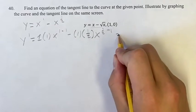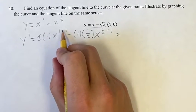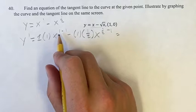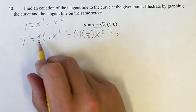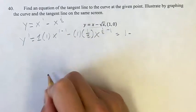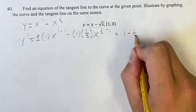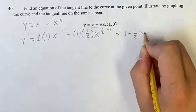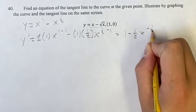Now we just simplify this. So we have 1x to the 0, which is just 1 times 1, since anything to the 0 is 1, which is just 1, minus 1 times 1 half is 1 half, x to the 1 half minus 1 is negative 1 half.